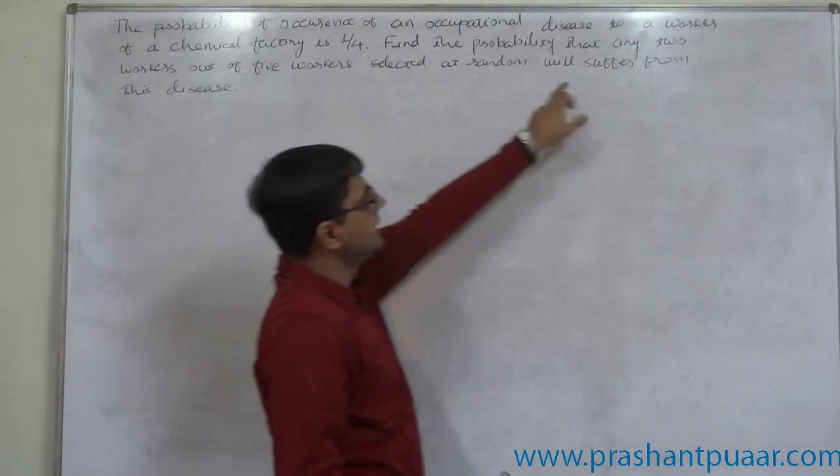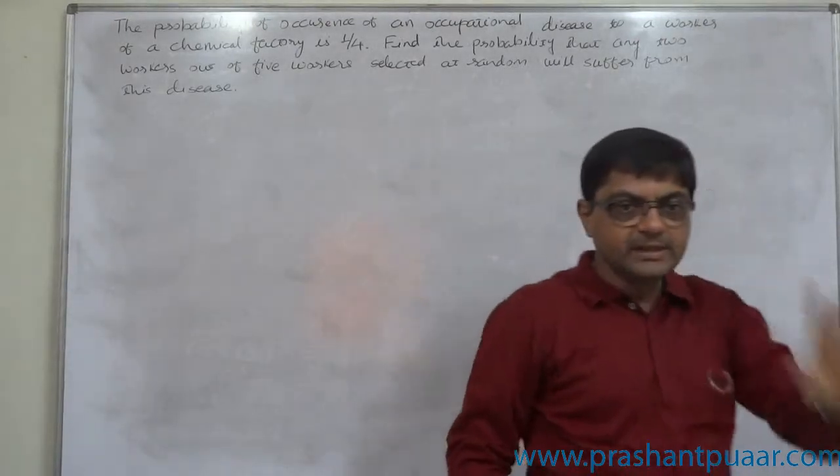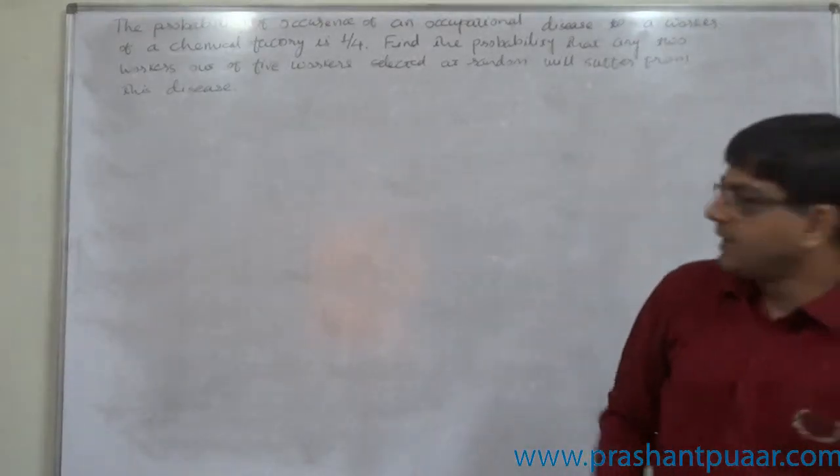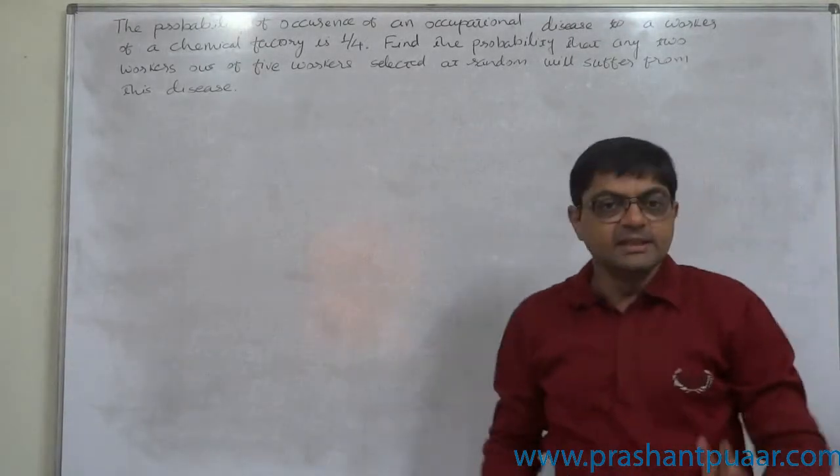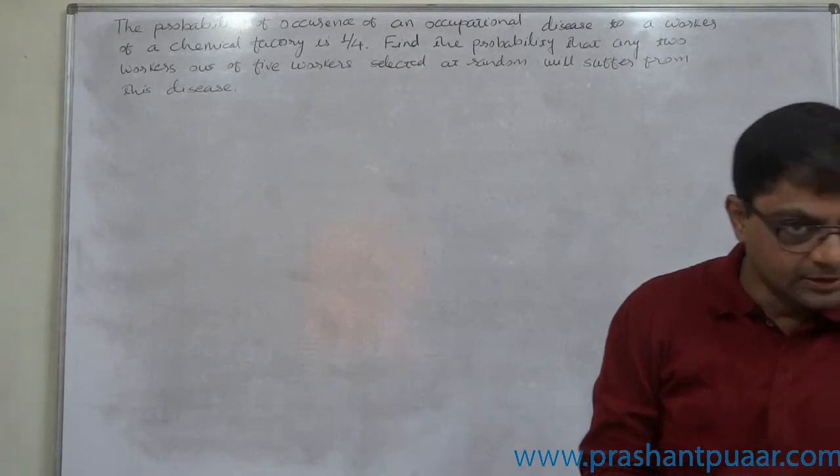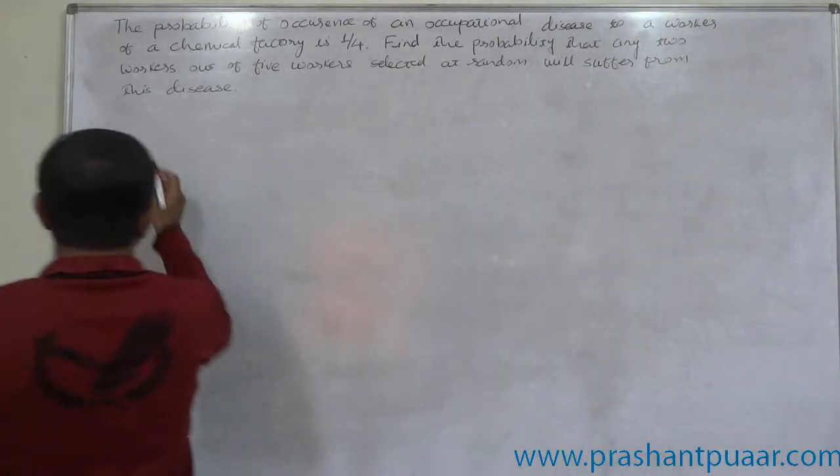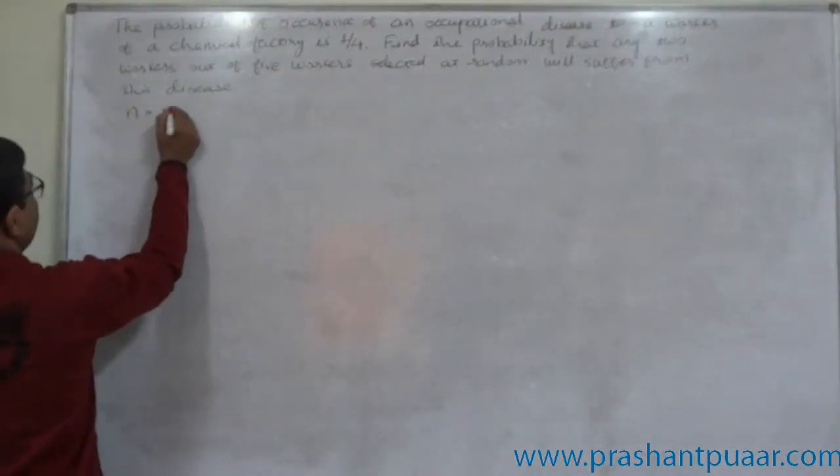Five workers selected at random. That means to check whether the employee is suffering from the particular disease, these are the 5 trials. Number of trials are finite and fixed, only 5. N is 5.